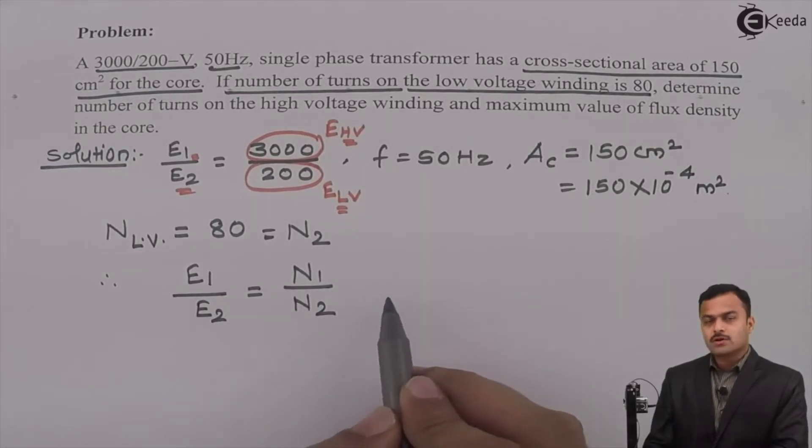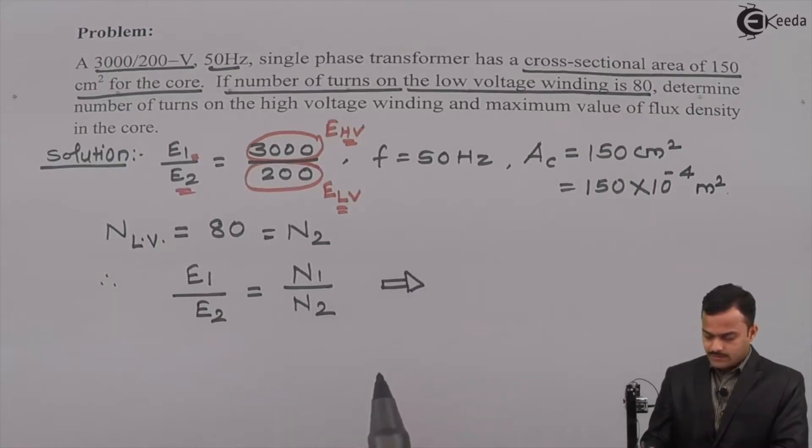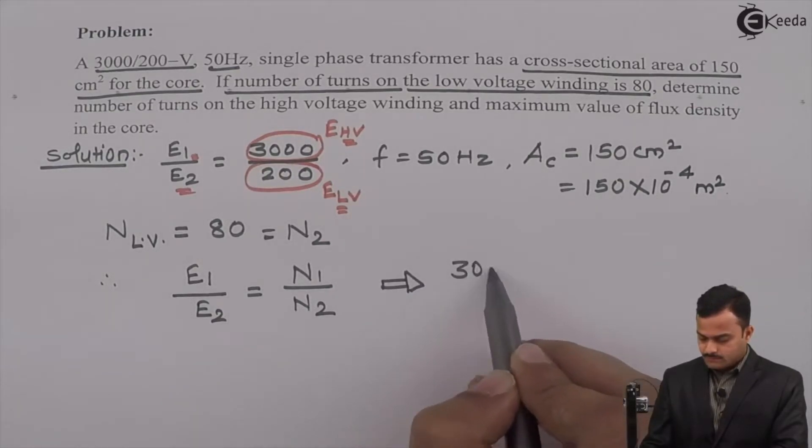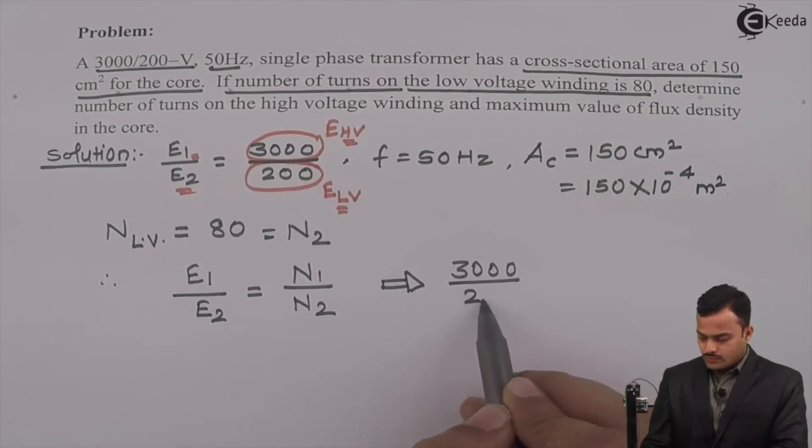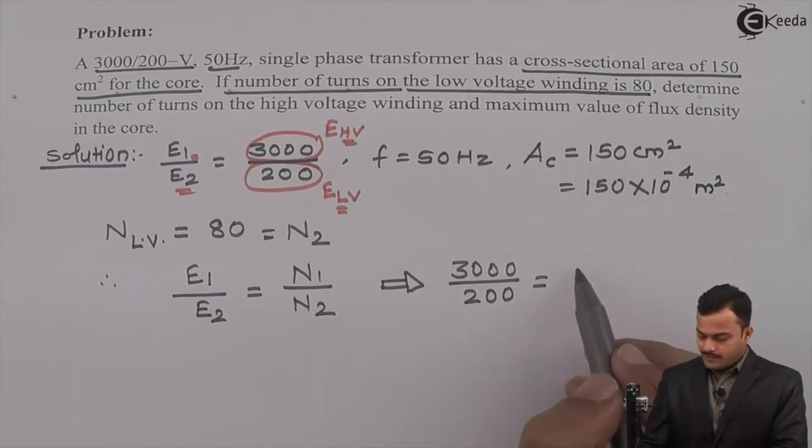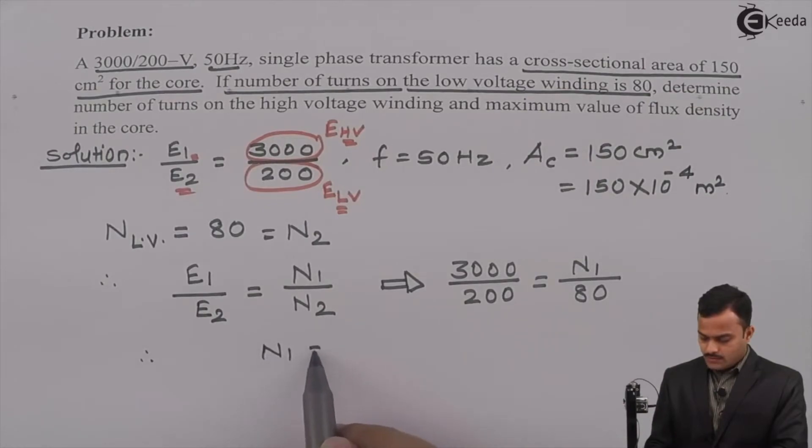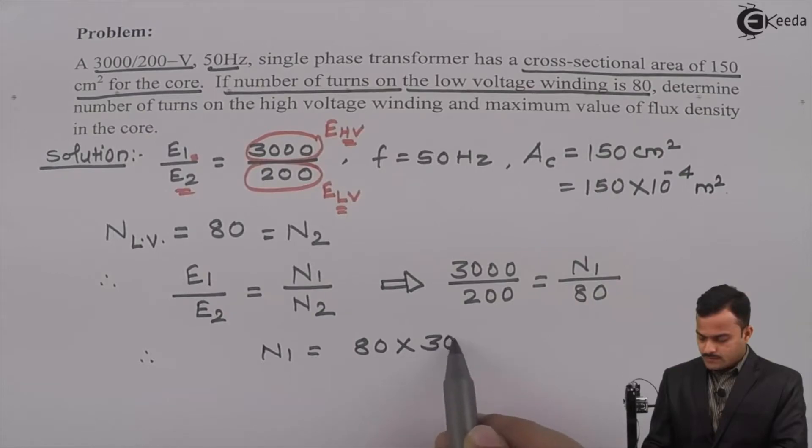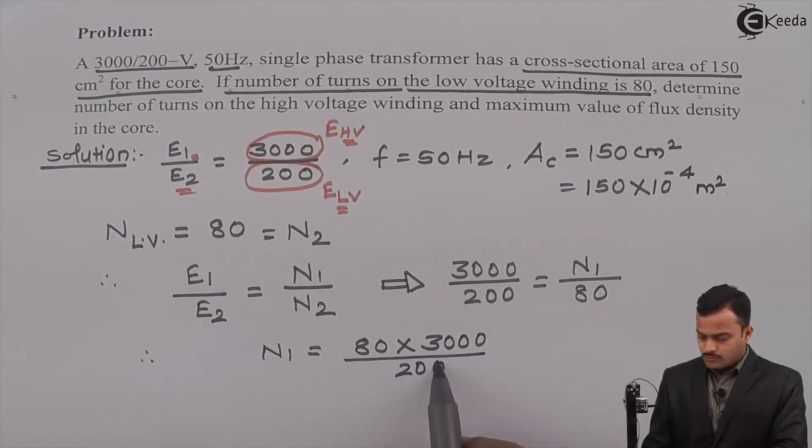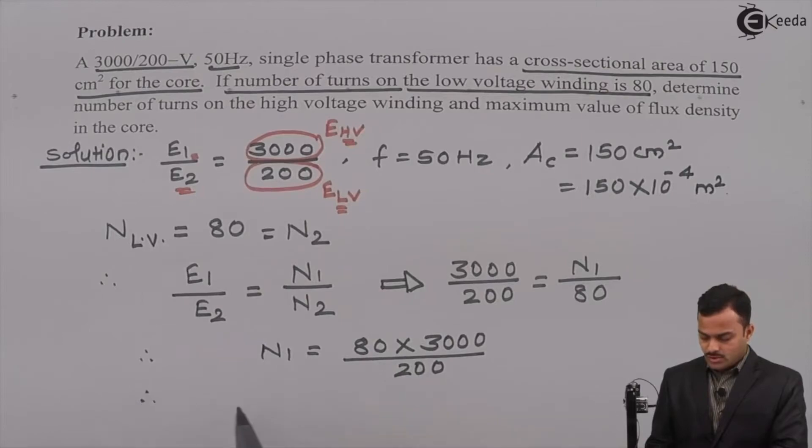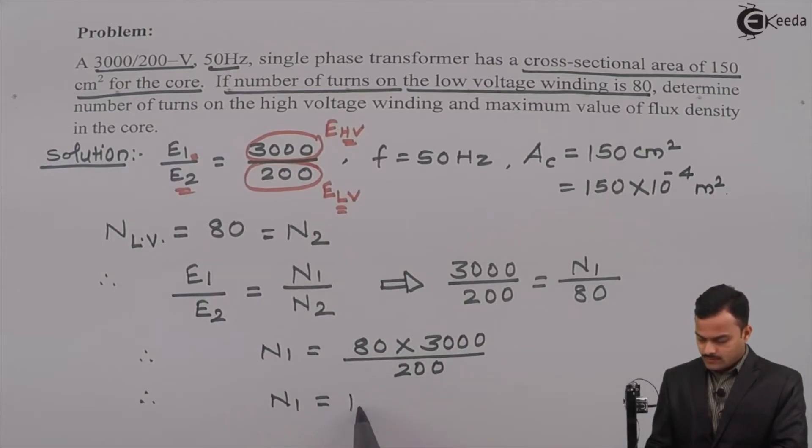So if I substitute all the known values it will be like this: E1 is 3000, E2 is 200, number of primary turns we are supposed to calculate, and N2 is 80. So N1 equals 80 multiplied by 3000 divided by 200. So if we solve, you will get N1, number of turns on high voltage side, equals 1200.